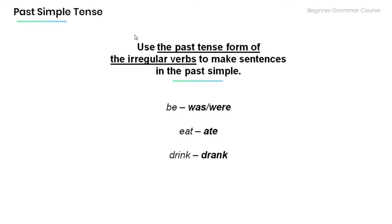Make sure to use the past tense form of irregular verbs to make sentences in the past simple. For example: be → was or were, eat → ate, drink → drank.